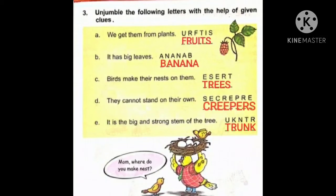Number C: Birds make their nests on them. Chidiya apna ghosla kahan par banate hai? Trees mein banate hai. So the correct answer will be T-R-E-E-S. Trees. Number D: They cannot stand on their own. Kaunse paudhe hai jo khud se khade nahi ho paate? They are creepers. C-R-E-E-P-E-R-S. Creepers.